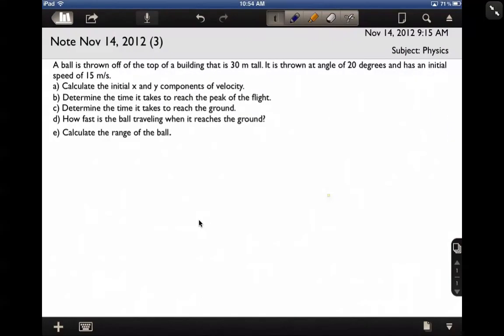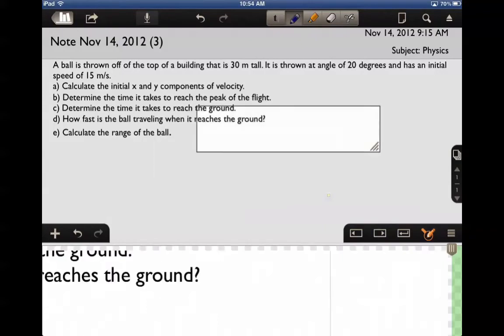So we have a projectile motion problem. This time the projectile motion problem is not on level ground, so the object is being thrown off at a height higher than what it lands. In fact, the picture looks like this.